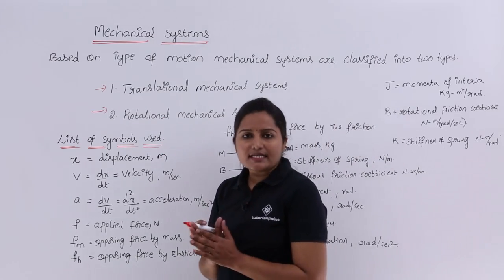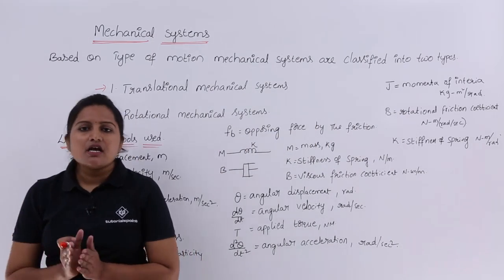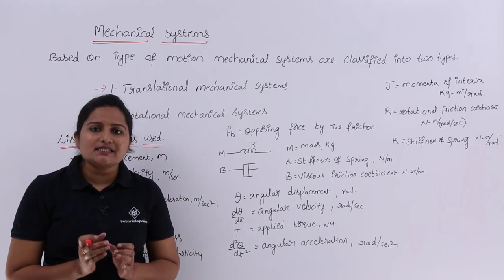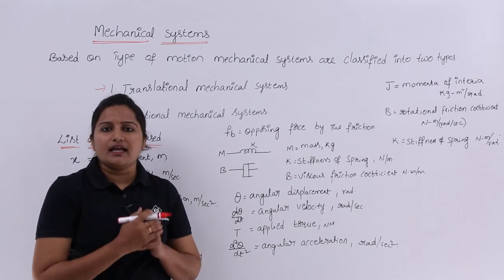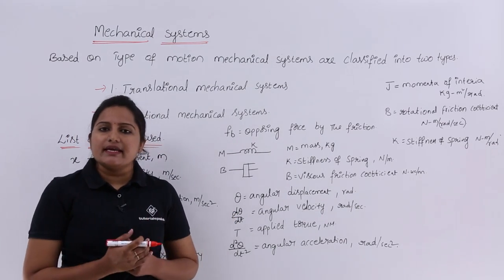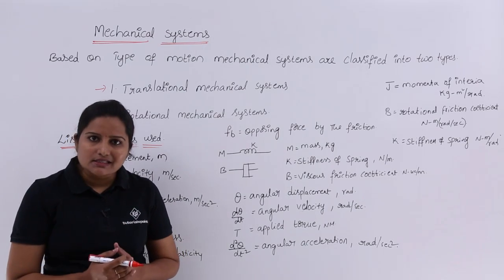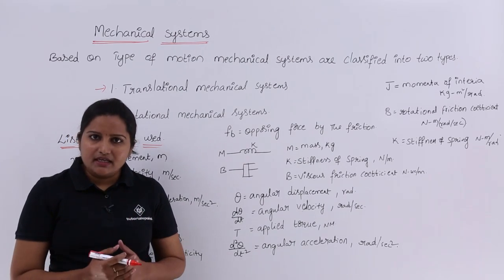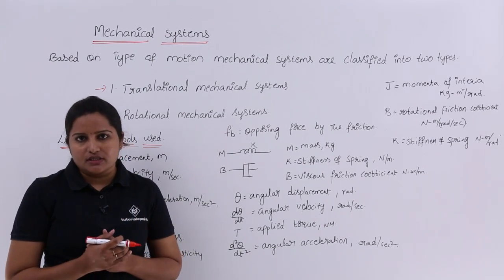Coming to translational mechanical systems, these systems will move along a straight line. The basic elements are mass, spring, and dashpot.